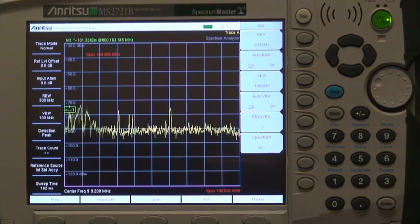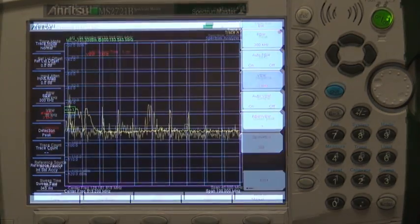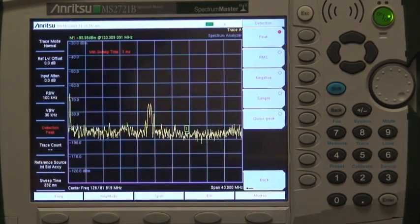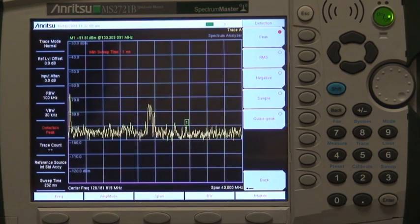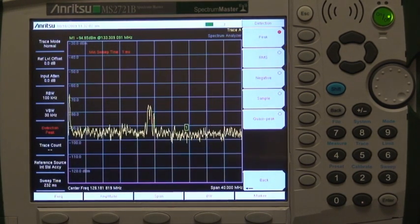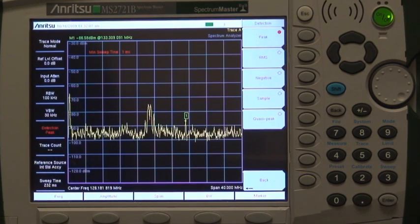The video bandwidth filter can be used to smooth out variations on a measurement. This measurement is made using automatic settings. There is a signal at the marker position, but it is hard to be certain. With these automatic settings, the sweep takes 232 milliseconds.